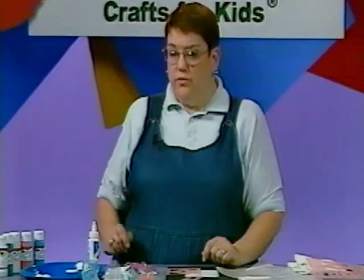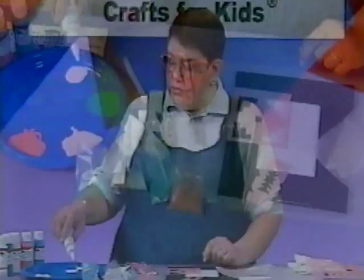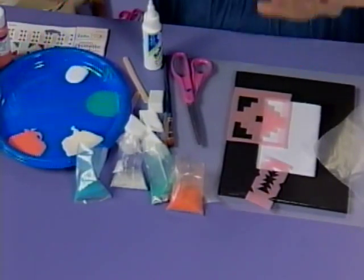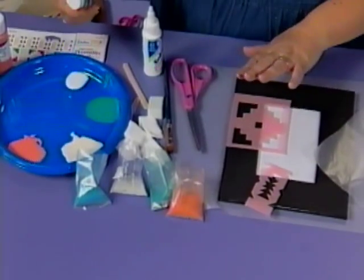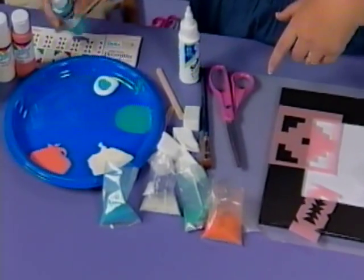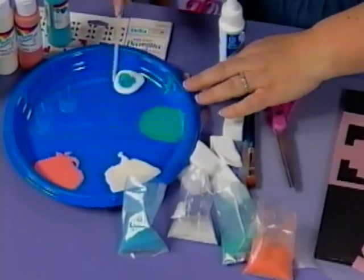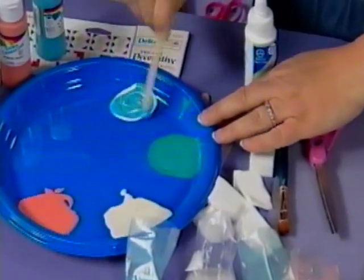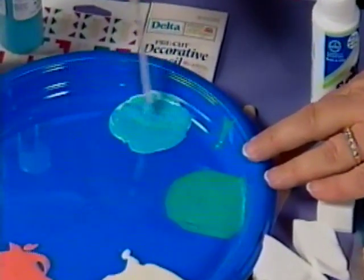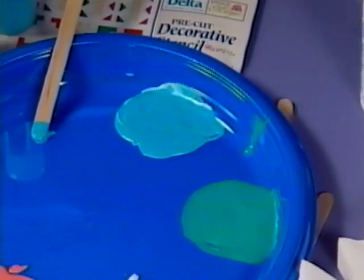We're going to be using glue as our base. You want to squeeze out some glue on a plate, and then add your paint color to it. I've chosen my sand colors, and you want a color of paint that closely relates to that sand color. Just add some glue, throw in some paint, swirl it around, get it mixed together with a craft stick, and it's ready to go.